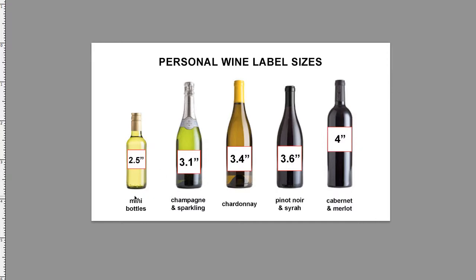When you go to a mini bottle, it's very much a replica of this larger Cabernet Sauvignon type of bottle, however it's much much smaller. If you design your label in a square format, we are able to scale it all the way down from four inches down to this 2.5 inch size on the mini bottle.